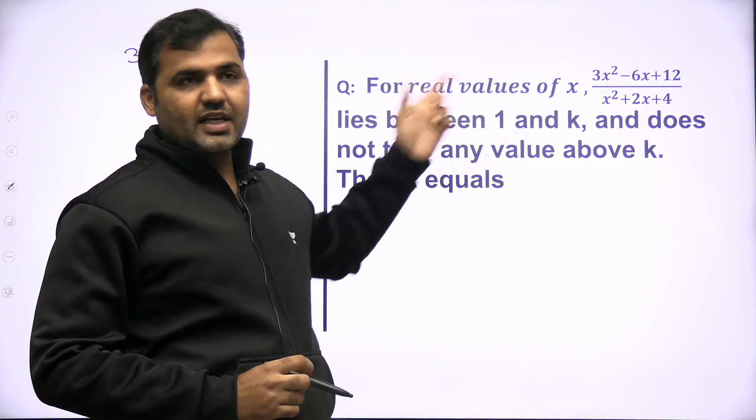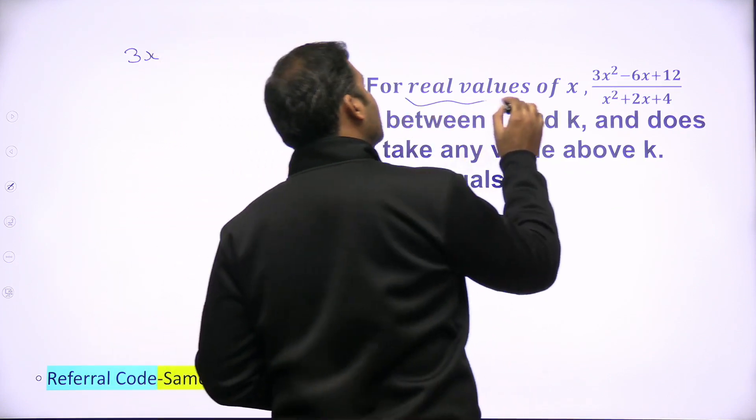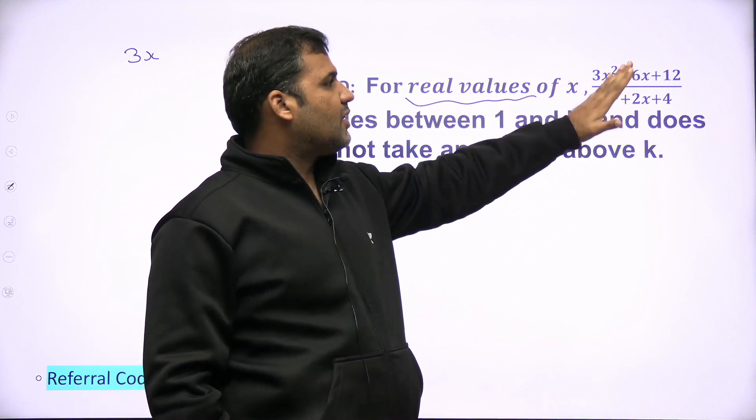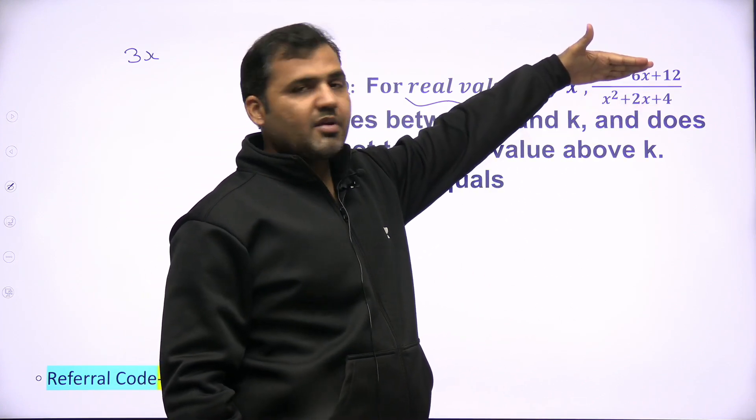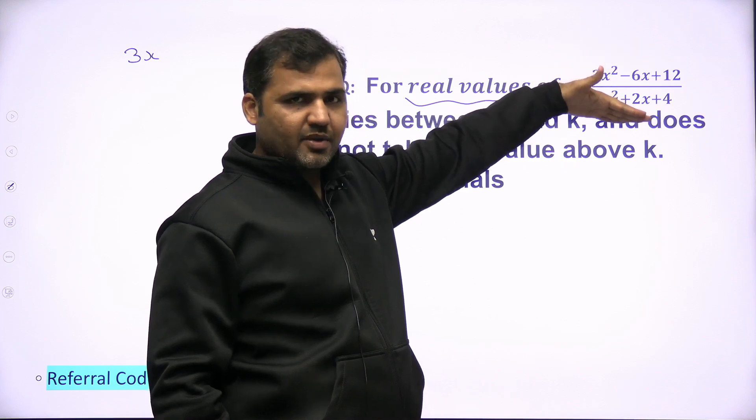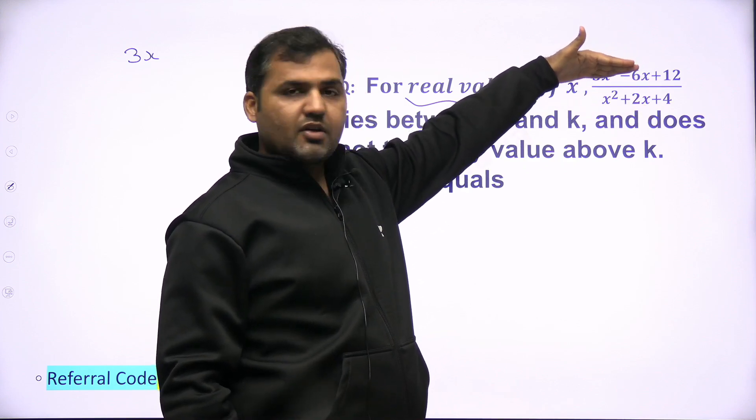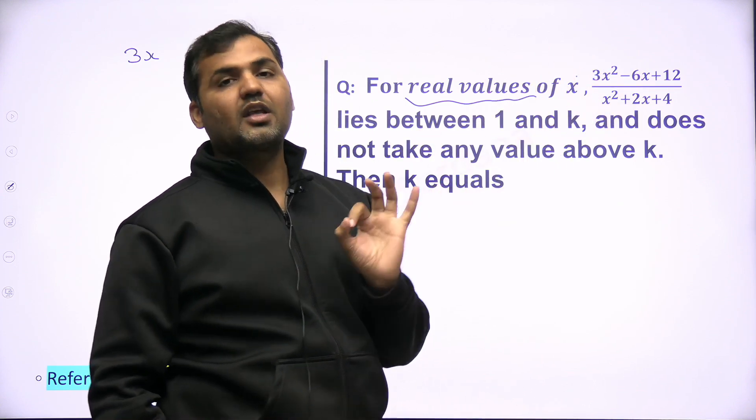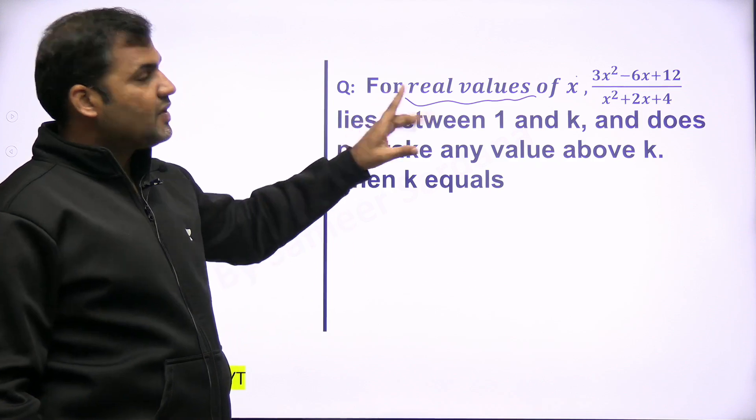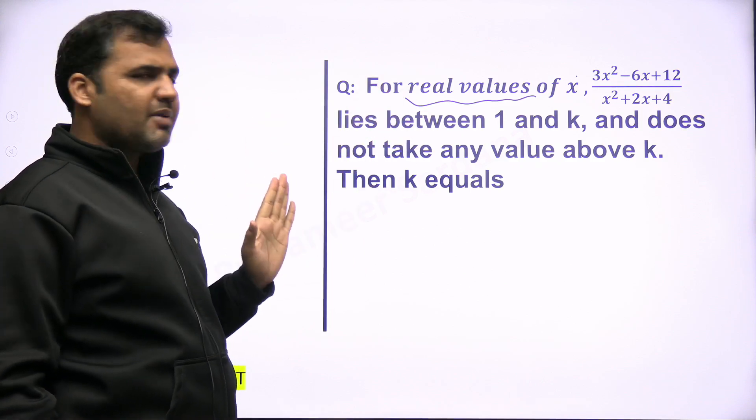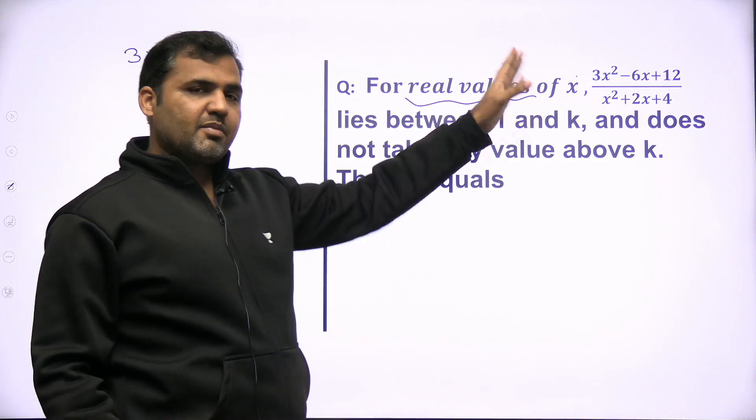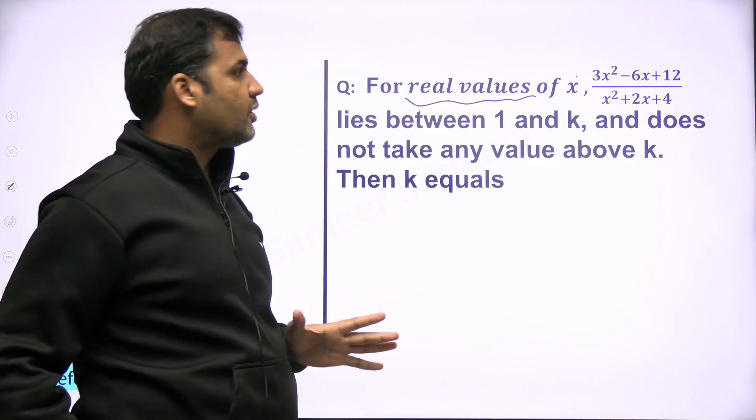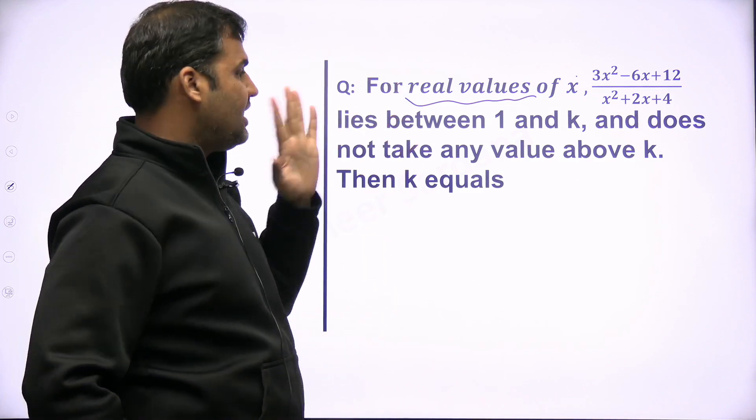There's information given here in the first line itself that the value of x is a real number. This is what you have to use. And this is a standard method for any quadratic expression, or any fractional expression which have a quadratic equation in the numerator as well as a quadratic equation in the denominator. This type of question came in the previous CAT papers multiple times.